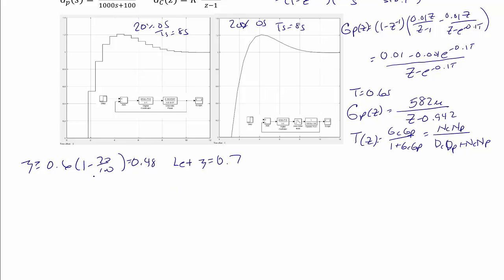Then our settling time is 4.6 over zeta omega n is equal to 8. And from here, we get that zeta omega n is 0.575, but if we let omega n equal 0.7, then omega n equals 0.575 divided by 0.7, which equals 0.82 radians per second.